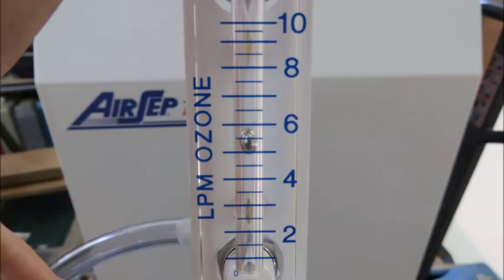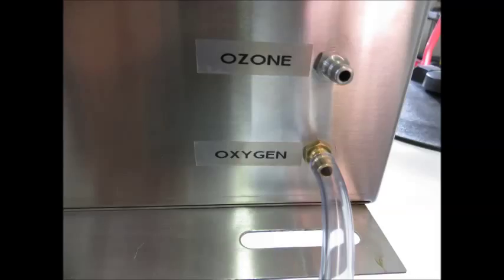Here's a close-up showing the measurement at 5.5 liters per minute, and then it should be steady coming out of your oxygen concentrator. Then you can hook it up to the ozone unit to the fitting that says oxygen. It's a brass barbed fitting.